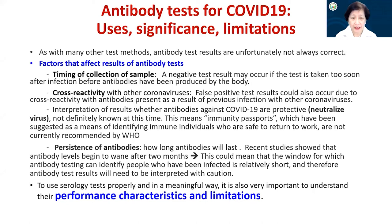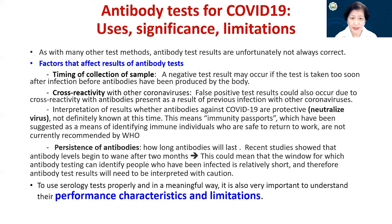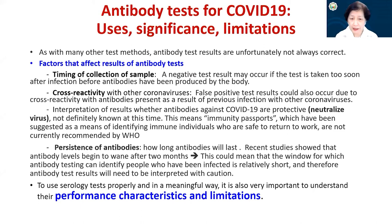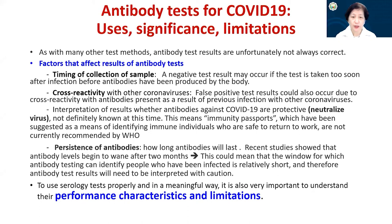The interpretation of results is also important. If you have antibodies, this is not an immunity passport allowing you to travel to the next region. As far as the WHO is concerned, immunity passports are not clear yet, and antibodies cannot be used as a means of identifying immune individuals who are safe to return to work or travel. Another factor is the persistence of antibodies — recent studies show antibody levels begin to wane after two months from infection, so the window for antibody testing to identify previously infected individuals is relatively short.